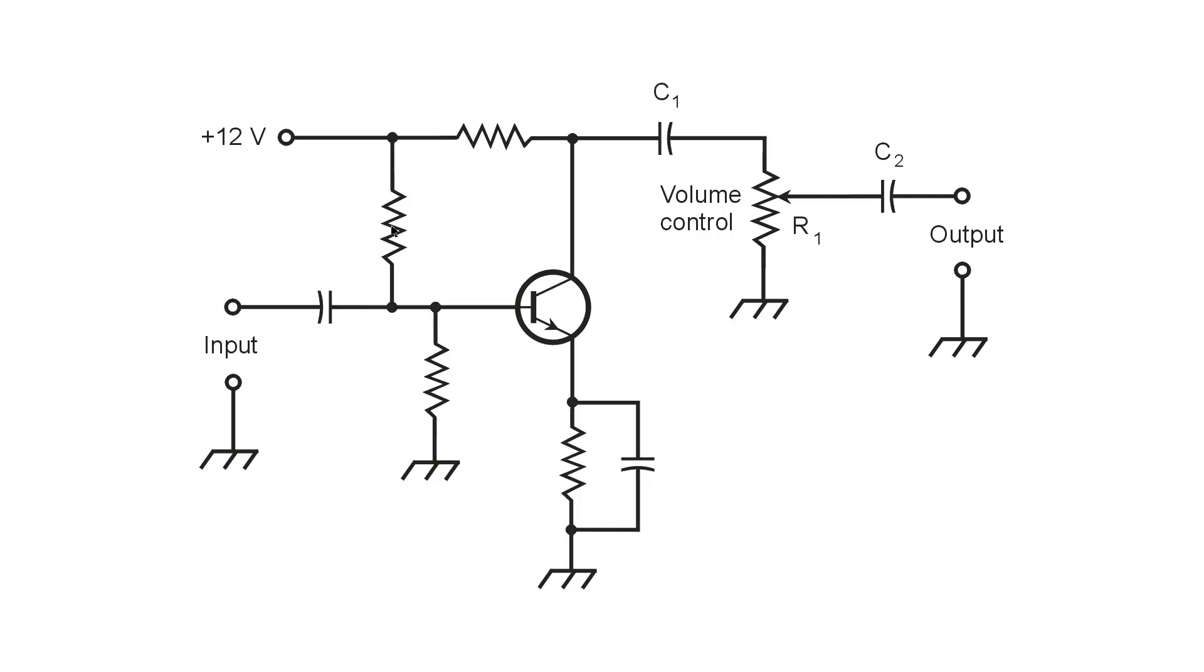By now you should know that these two resistors, I haven't even given them component designators, serve to provide the proper bias to the NPN transistor so that it will operate in class A. And this is an audio amplifier intended for minimum distortion.